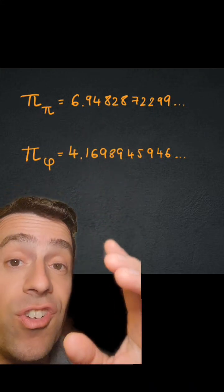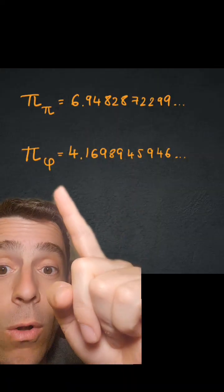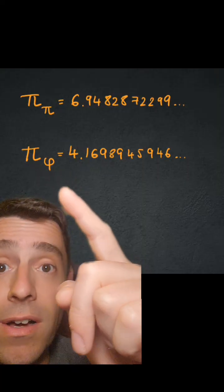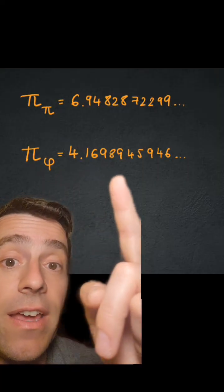And what happens if the eccentricity, if the ratio between b and a is the golden ratio, then I get some value of pi sub golden ratio, which is 4.169, etc.